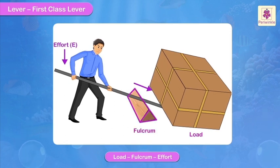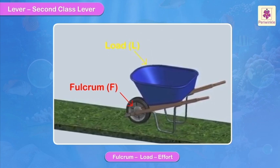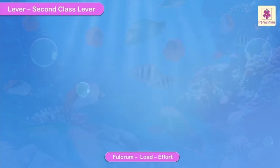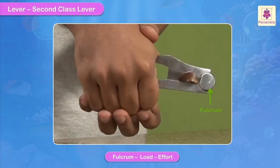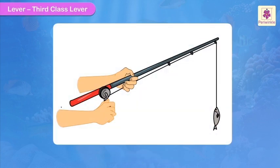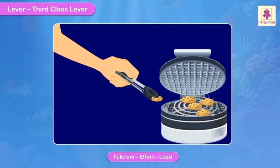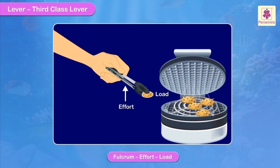There are three kinds of levers with different arrangements of load, effort and fulcrum. First class lever: the fulcrum is between the load and the effort — the effort put at one end of the rod is transferred to the other end which is pushed under the load. Second class lever: the fulcrum is at one end, the effort is applied at the other end, and the load is in between. Third class lever: the effort is between the load and the fulcrum.